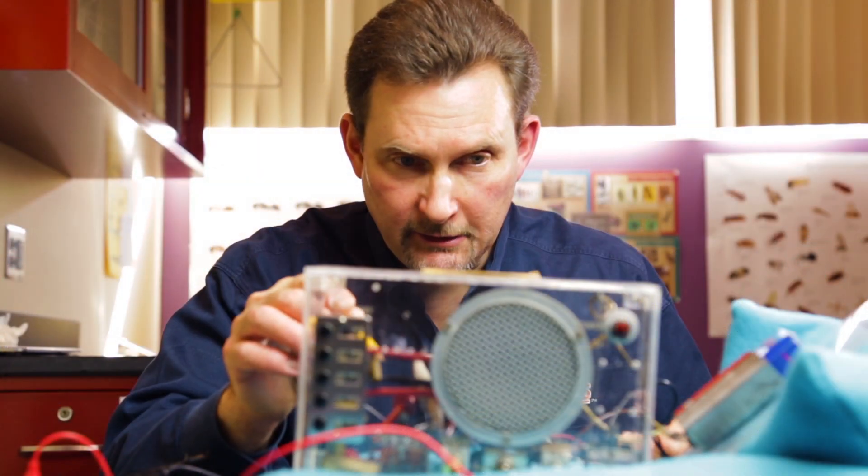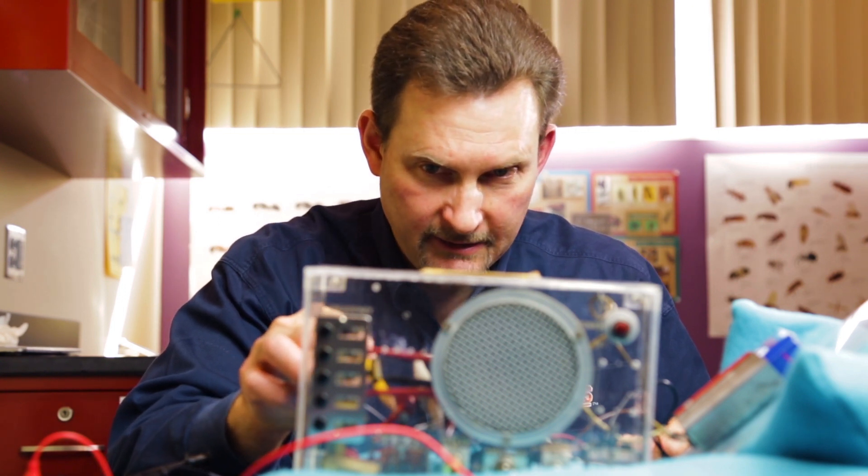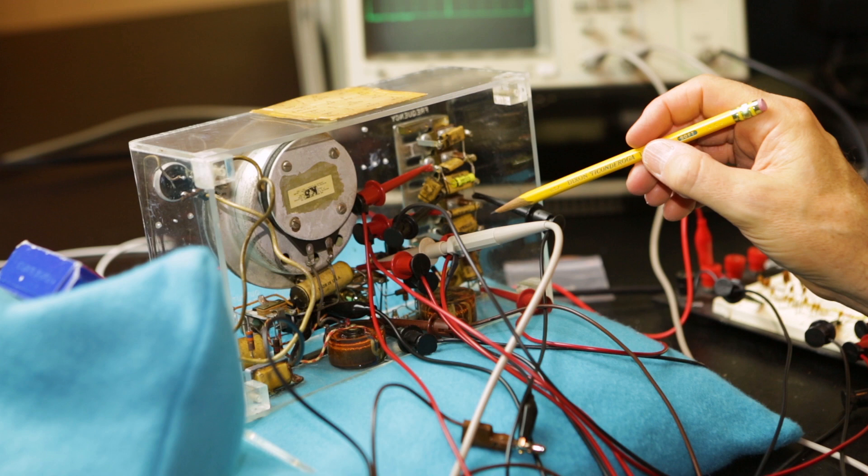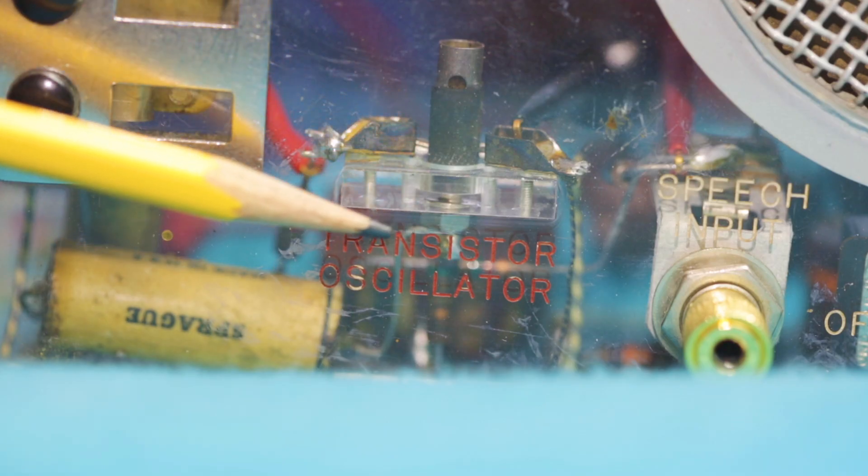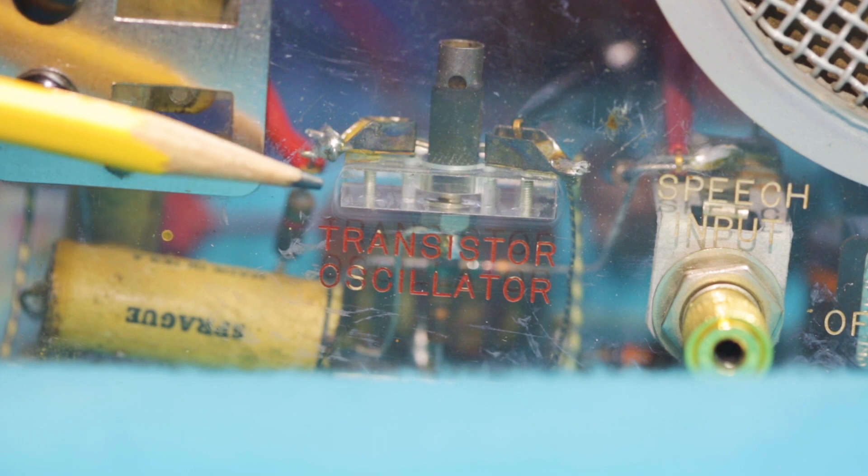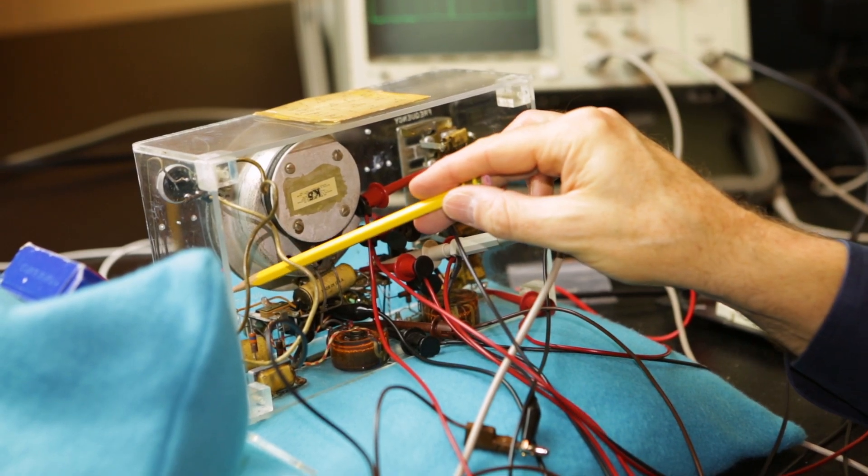There's a couple of key components to this. Obviously, the most important component is the point-contact transistor. There's two of those in here. One here, which is on the oscillator side of the circuit, and there's another one over here, which is on the amplifier side.